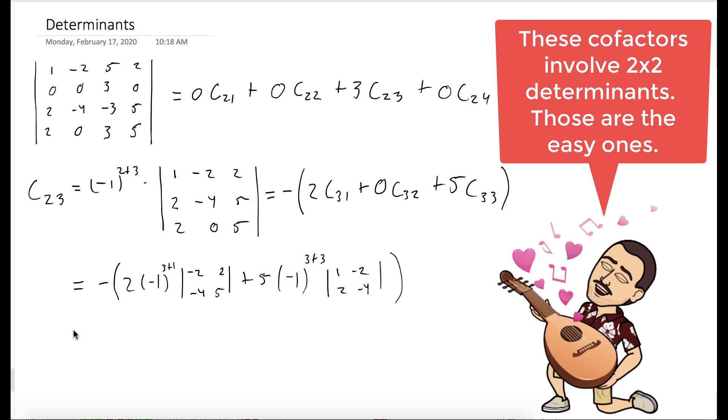The determinant of this first 2 by 2 matrix is negative 10 minus negative 8, and the determinant of the other one is negative 4 plus 4.